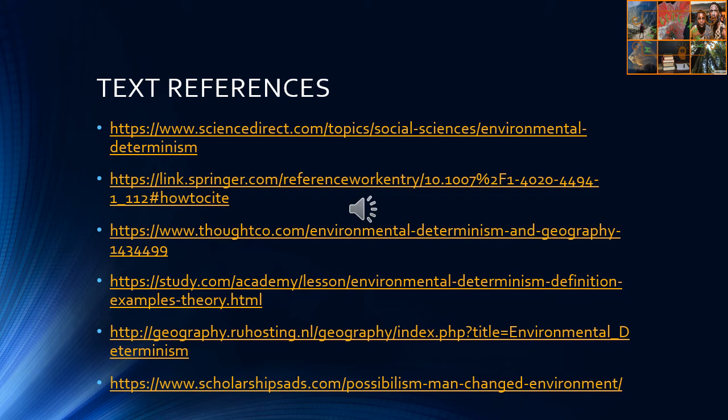So in studying geography, we have to have the mindset of environmental possibilities and view concepts and phenomena from the point of possibilities — which incorporates both aspects: determinism, where environment influences man, and where man also influences environment. Thank you for watching this video; for more understanding you can check out the following references.